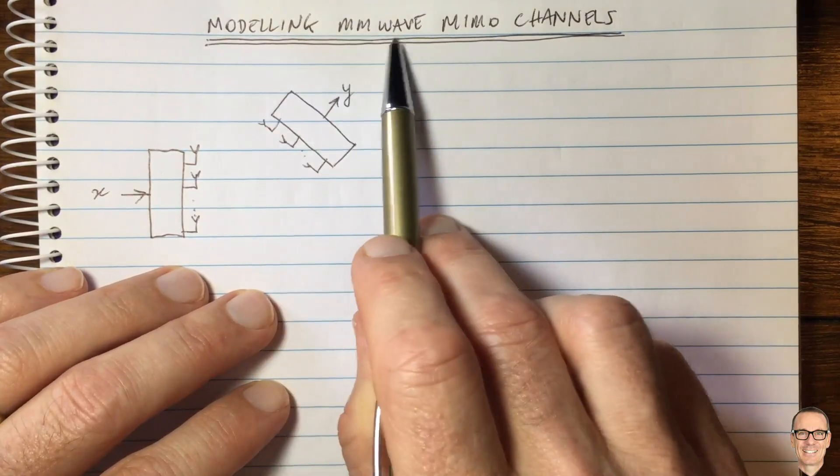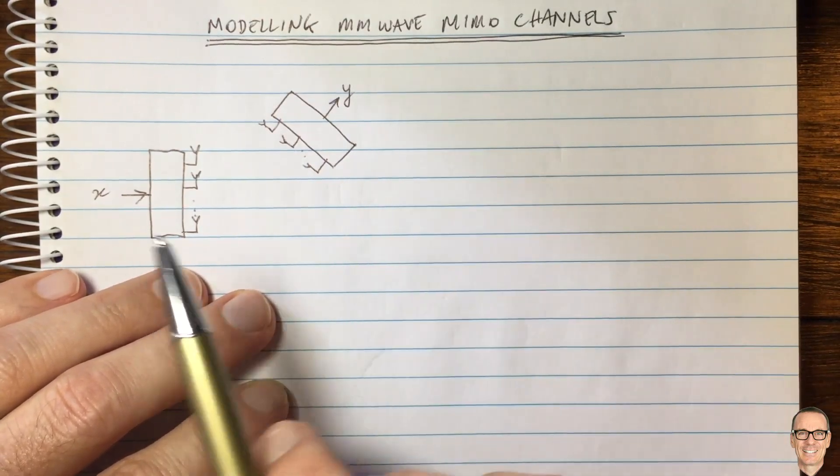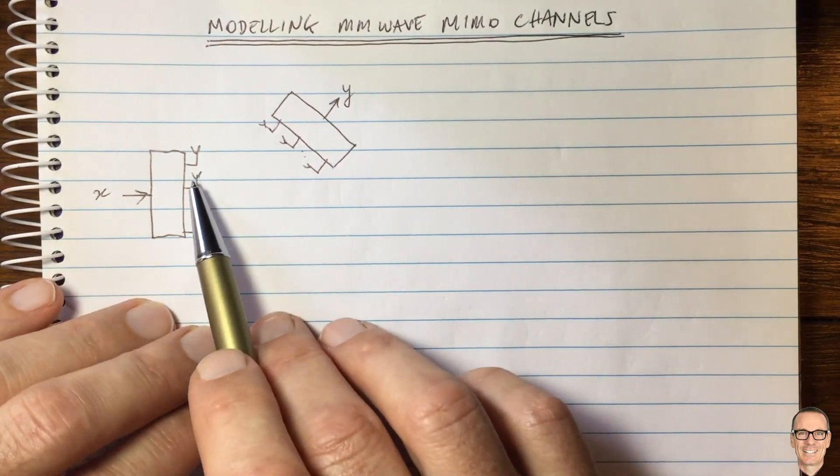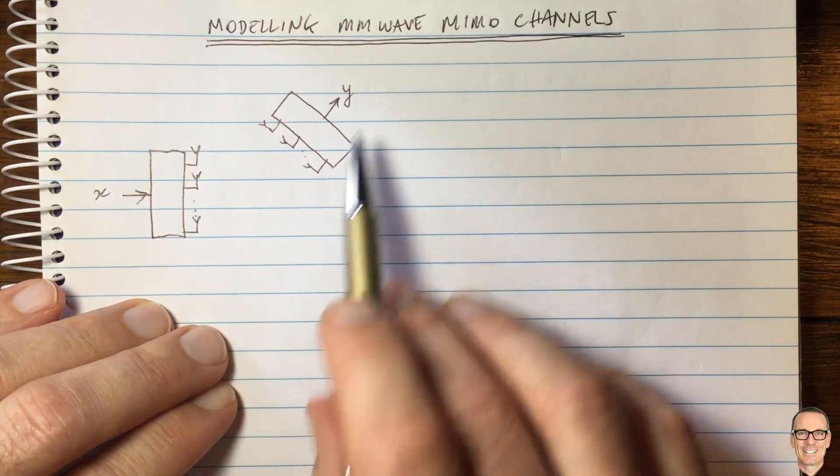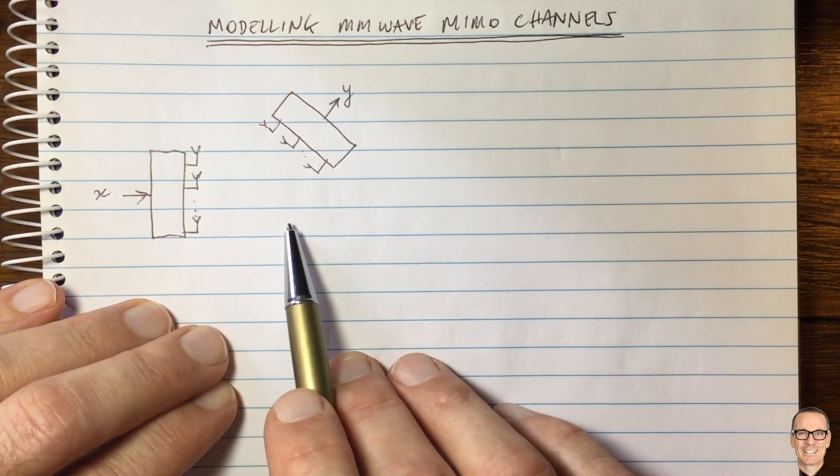So let's look at modeling millimeter wave MIMO channels for millimeter wave communications. And one of the main properties of millimeter wave communications is that the paths are very distinct.